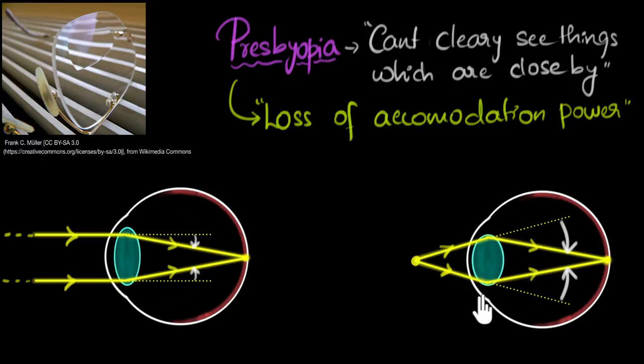But when things come close by, now we have problems bulging this lens. Because the lens has lost its elasticity, it has become hard, now the lens will not bulge, it's hard to push it, and as a result, the optical power will not increase. And as a result, the rays of light will not bend enough, and so it will not focus on the retina. And that's why, due to this, we will not be able to see things which are close by.